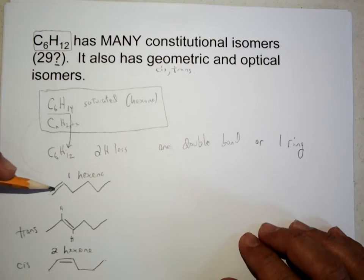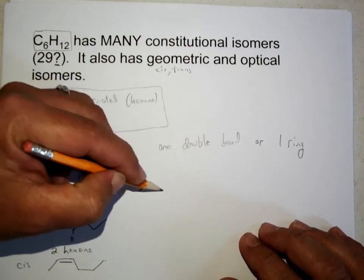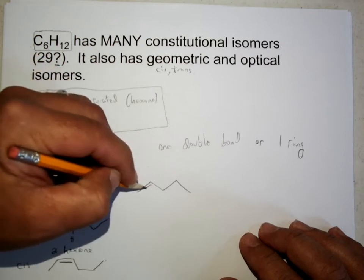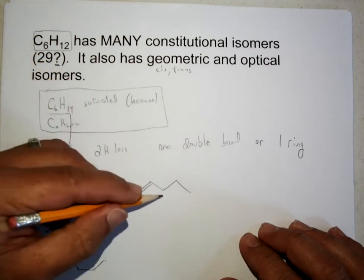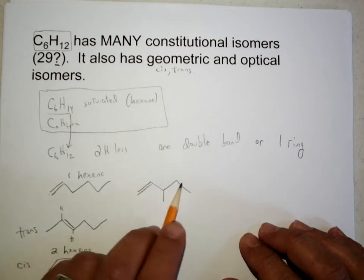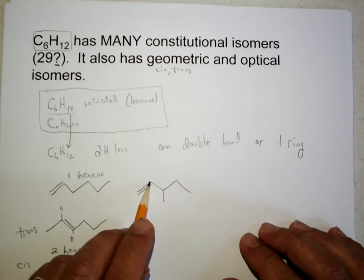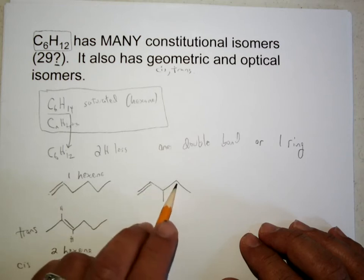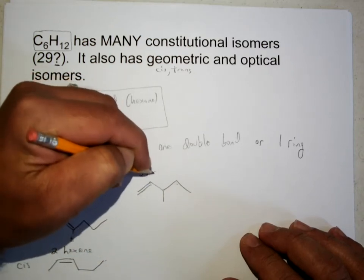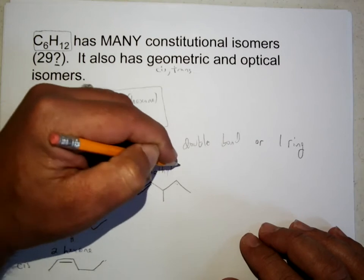Then just like we had for alkanes, you can shorten the chain to five carbons in a row, put the double bond in, and then put a methyl off to the side. The methyl off to the side can be in a variety of different places: second carbon, third carbon, fourth carbon. This guy would be three-methyl, one-hexene.